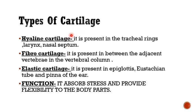Types of cartilage: hyaline cartilage is present in tracheal rings, larynx, and nasal septum. Fibrocartilage is present between adjacent vertebrae in the vertebral column. Elastic cartilage is present in the epiglottis, Eustachian tube, and pinna of the ear. The ear pinna and nose can be folded and still maintain their shape because of cartilage — they are soft and flexible but maintain shape. The function of cartilage is to absorb stress and provide flexibility to body parts like the nose and ear pinna.